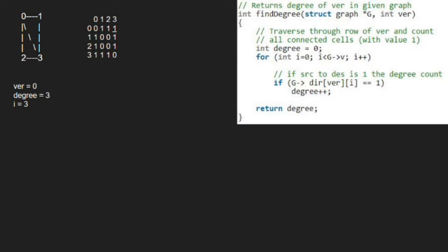Since there are 4 vertices, we come out of the for loop and return degree which is 3. Hence, degree of vertex 0 is 3. With this, we finish execution for this program.